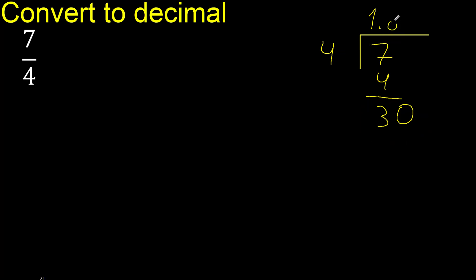4 multiplied by 8 is 32, excessive. Another number, 4 multiplied by 7 is 28. Subtract: 30 minus 28 is 2.